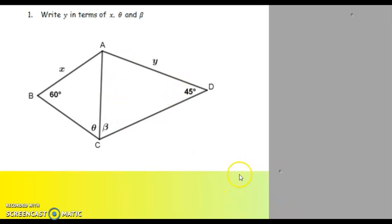Our very first sum that we encounter, they say write y in terms of x and theta and beta. The information given is quadrilateral ABCD, given in the picture, that angle D is 45 degrees, AD is equal to y, angle ACD is beta, angle ACB is theta, angle ABC is 60 degrees, and AB is equal to x.